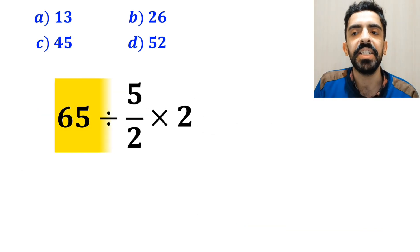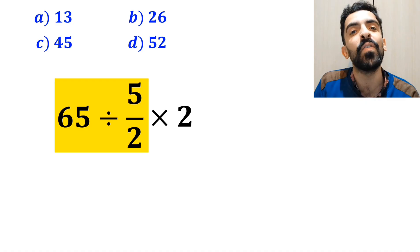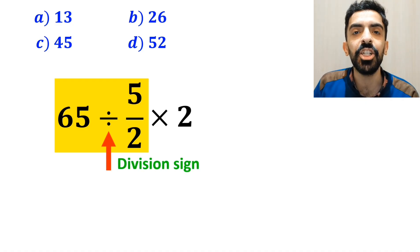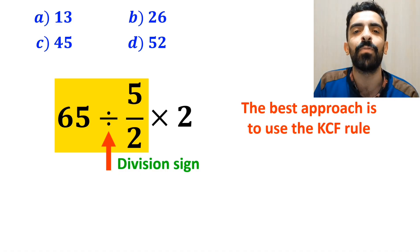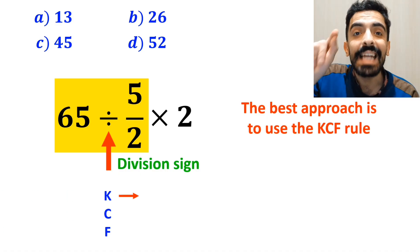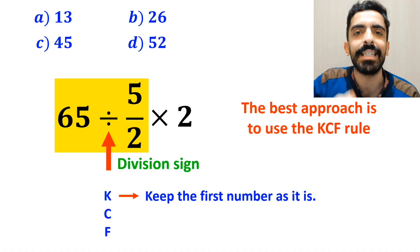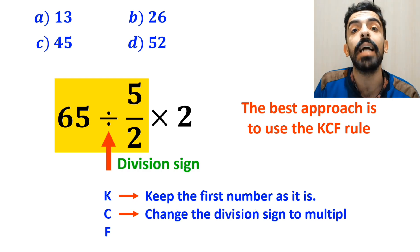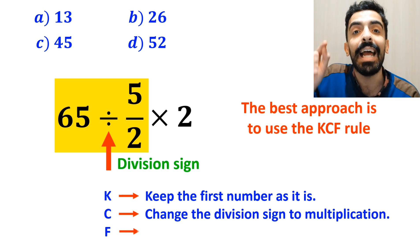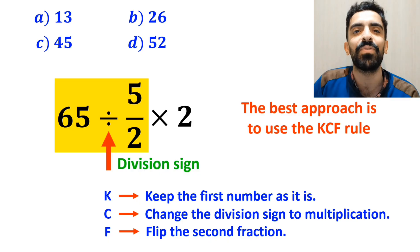So we'll start with the expression 65 divided by 5 over 2. Whenever we see a division sign between two terms, the best approach is to use the KCF rule. In this rule, K stands for keep the first number as it is, C stands for change the division sign to multiplication, and F stands for flip the second fraction.